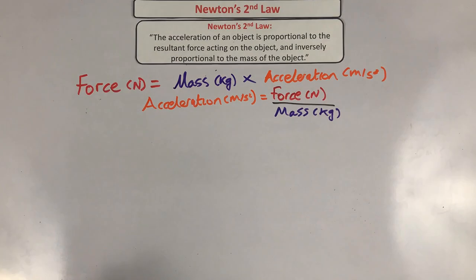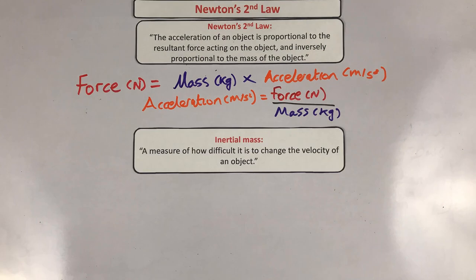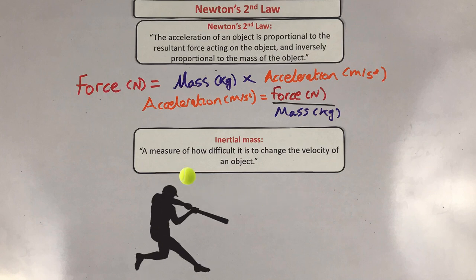This brings us to the idea of inertial mass — a measure of how difficult it is to change the velocity of an object. The higher the inertial mass, the more difficult it is to change its velocity. For example, it's easier to bat away a tennis ball than a cannonball.